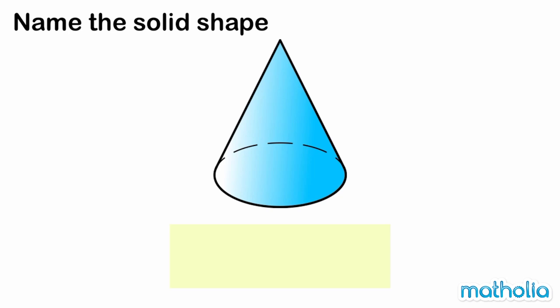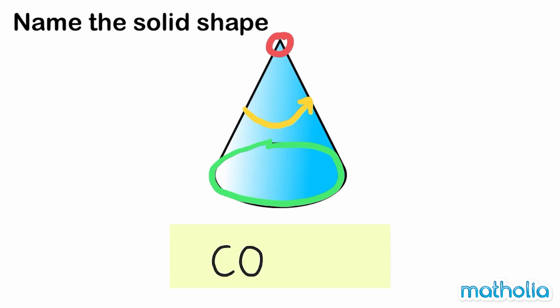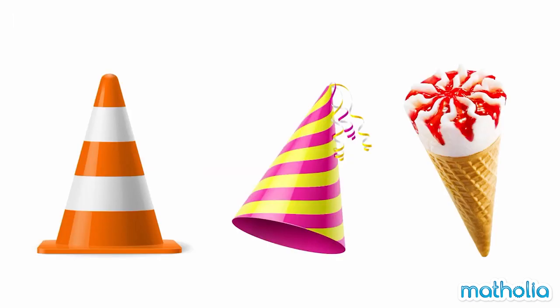This shape has a circle face, a curved face, and a pointed end. We call this solid shape a cone. These objects have shapes similar to a cone.